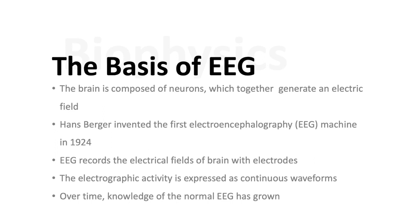The basis of EEG is that the brain is composed of neurons, which together generate an electrical field when they fire synchronously. Hans Berger, a famous German neurophysiologist, invented the first electroencephalography machine in 1924. That's why he's so famous.